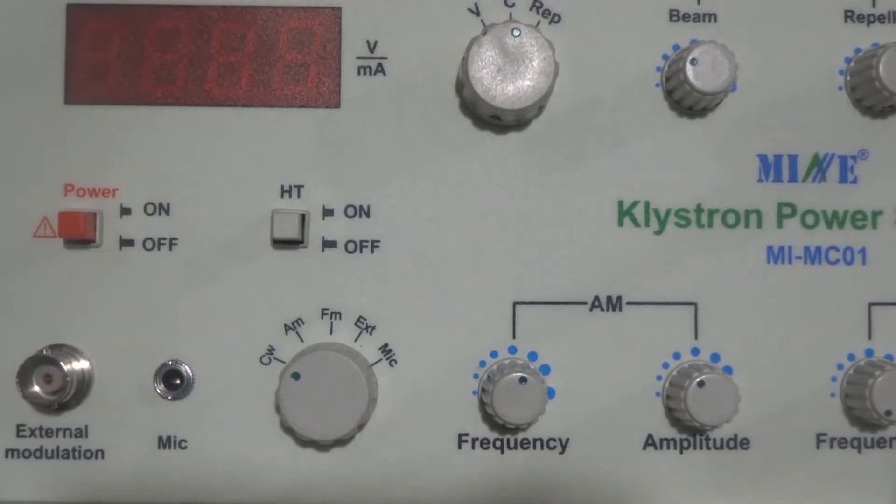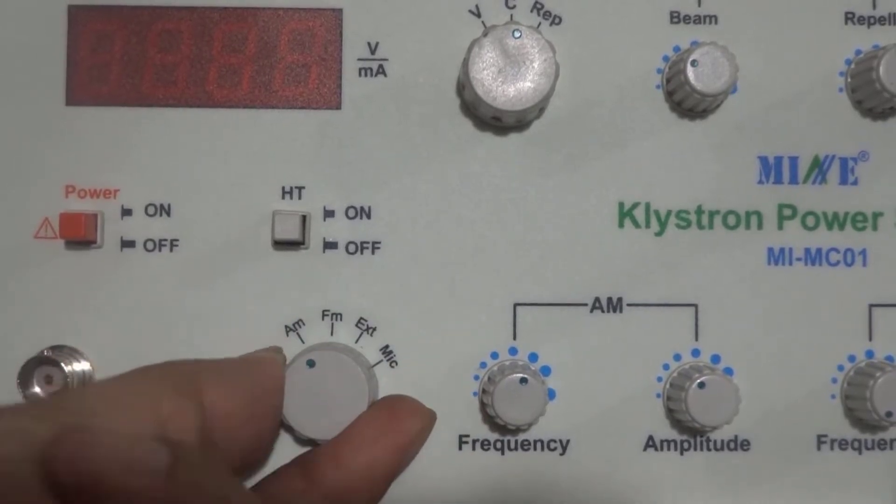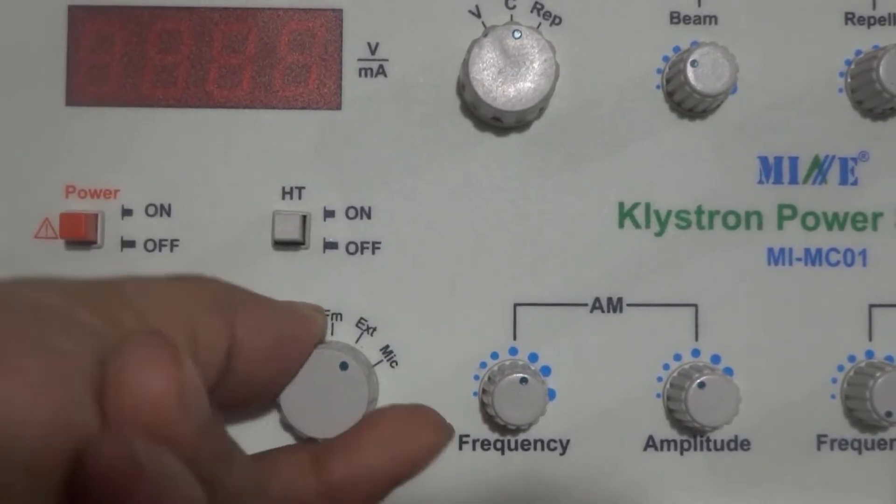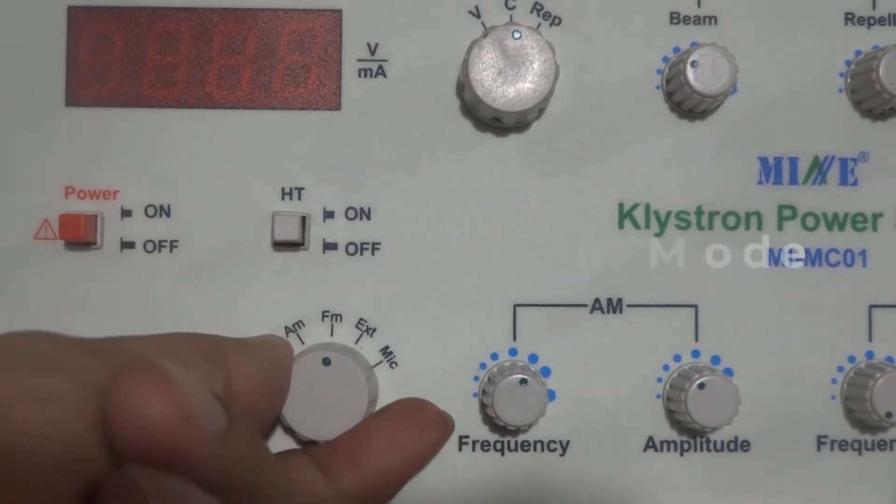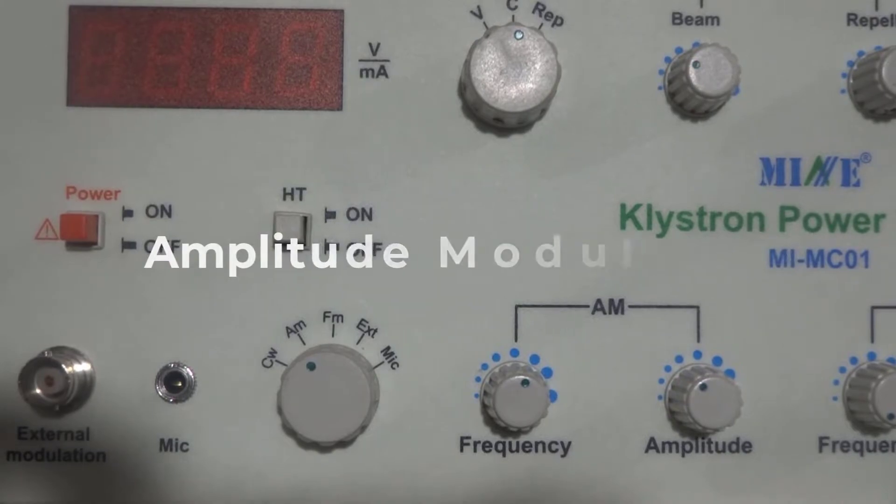The klystron power supply has different types of modes such as continuous wave, AM, FM, external and mic mode. For the experiment, we will go for AM, that means amplitude modulation mode.